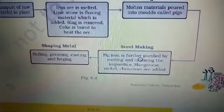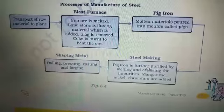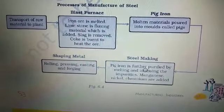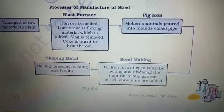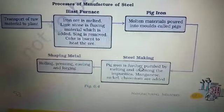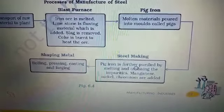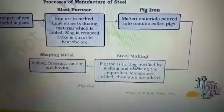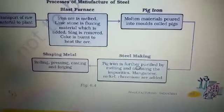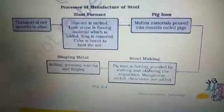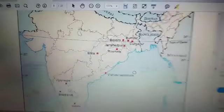After making the steel, the metal is shaped through rolling, pressing, and casting — also known as milling. So the full process is: transport raw materials, melt the iron using limestone and coking coal, pour the molten material into molds to form pig iron, purify the pig iron by oxidizing and adding manganese, nickel, and chromium, then shape the metal. This is the main process of the iron and steel industry. The distribution of iron and steel plants includes locations across India.